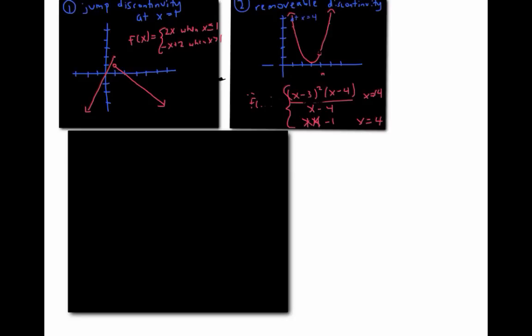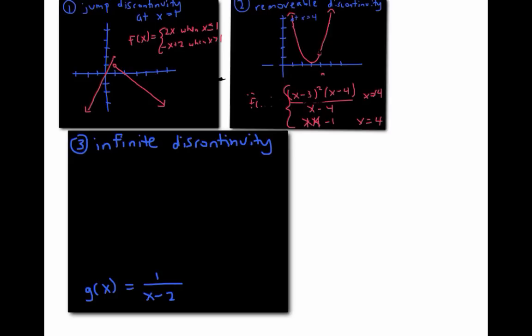A discontinuity can also occur at a vertical asymptote, where it's called an infinite discontinuity. For example, the rational function g(x) equals one over (x minus 2) has an infinite discontinuity at x equals two.